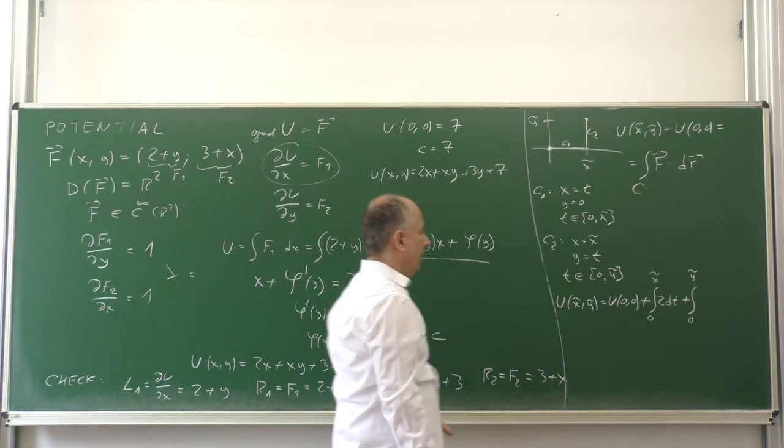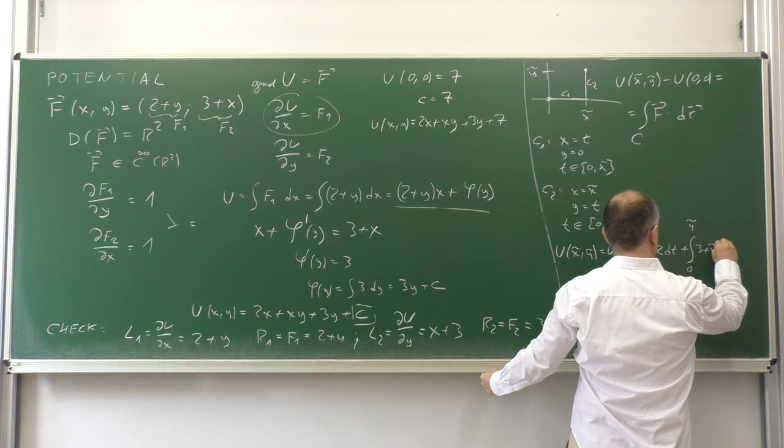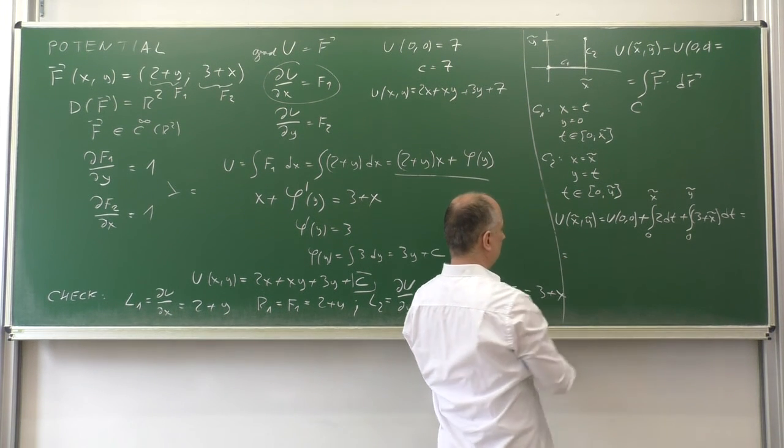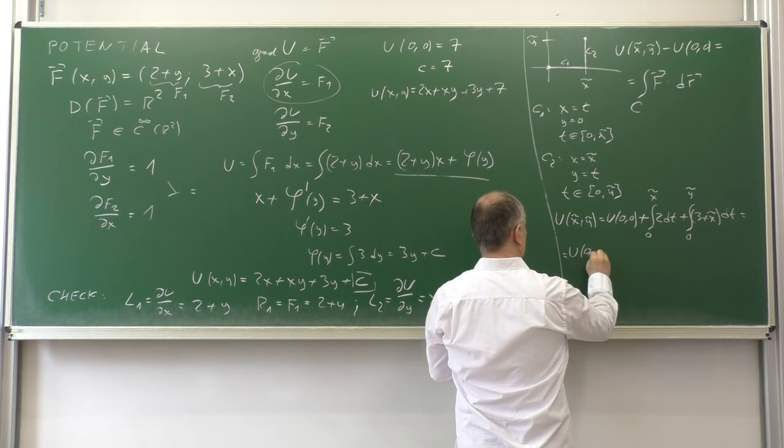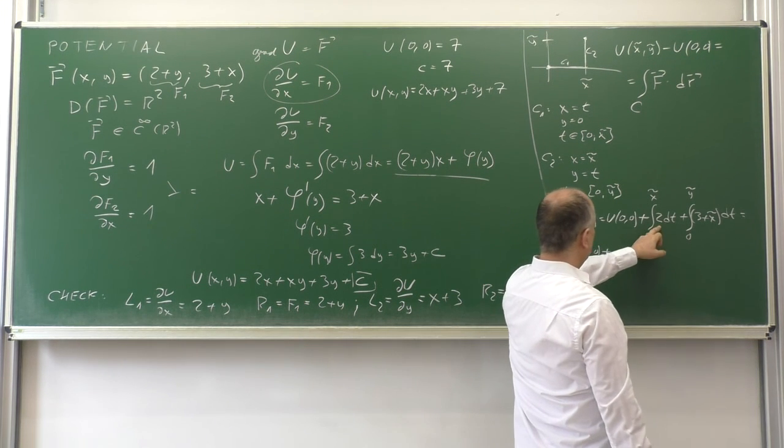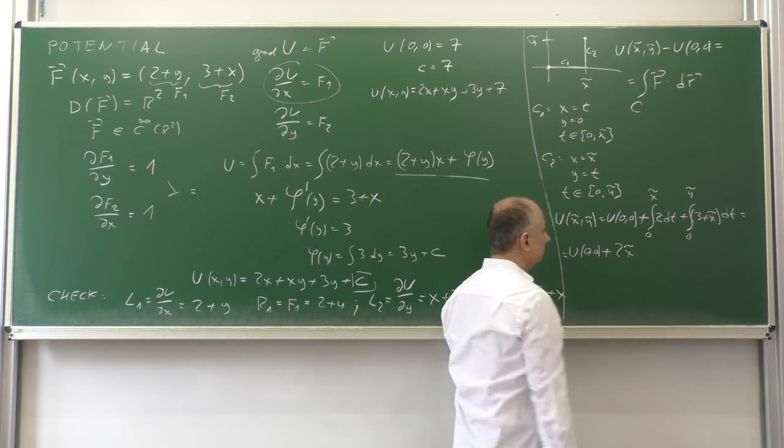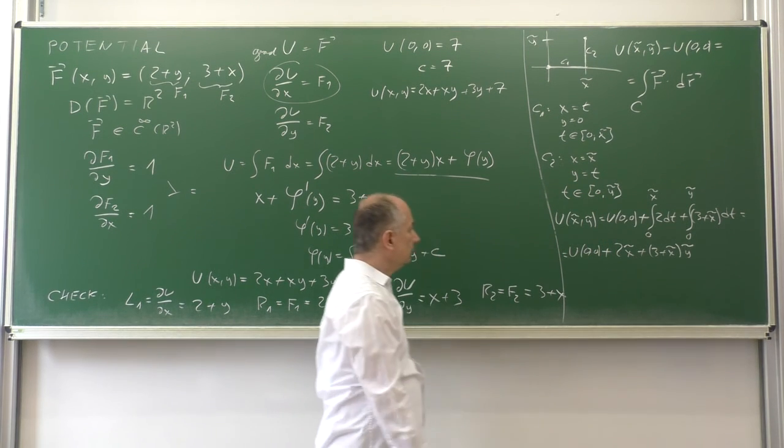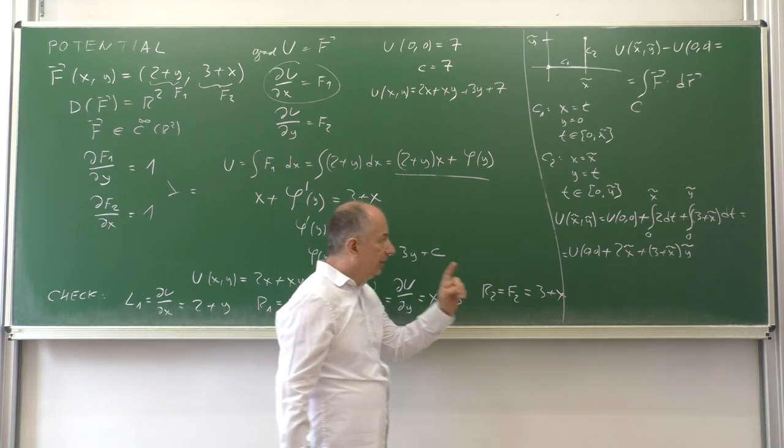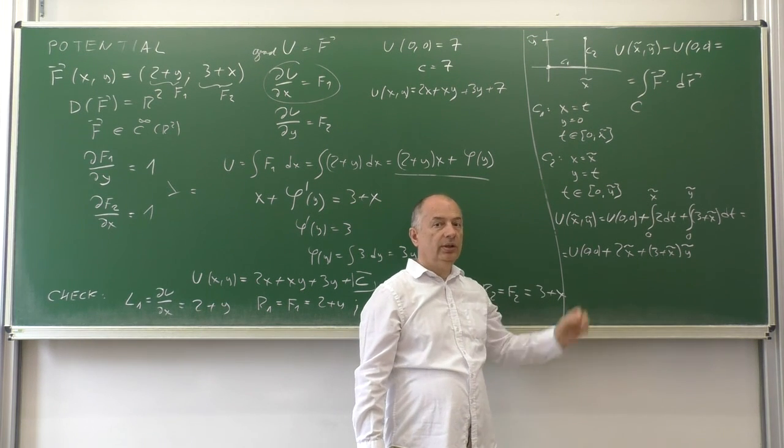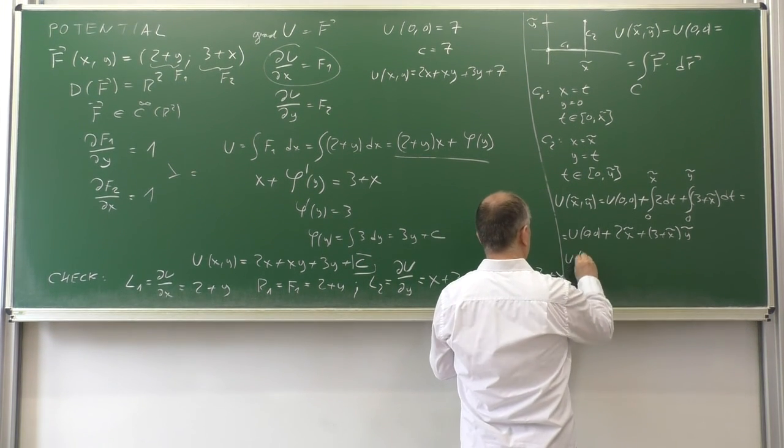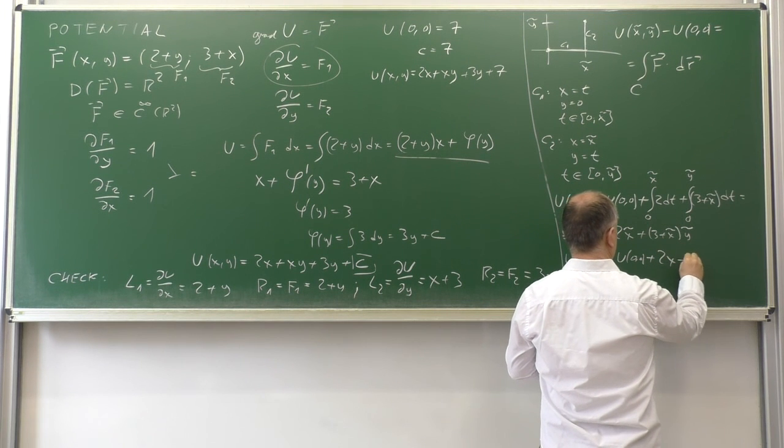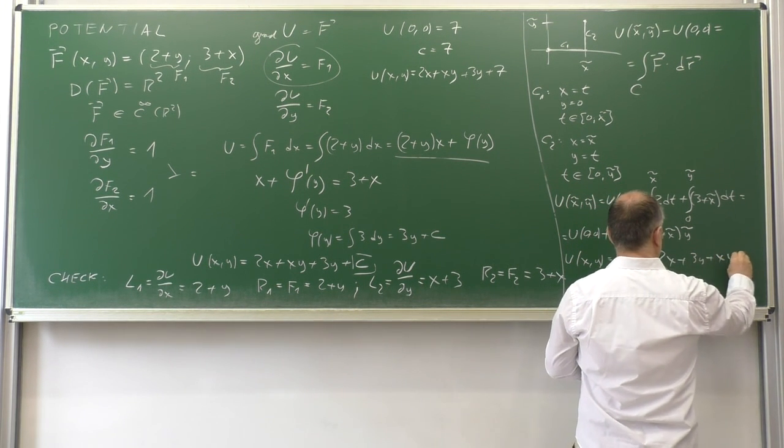F2 is 3 plus x, but x is equal to x tilde, dy which is dt. So we have u at (0,0) plus 2 times x tilde plus 3 plus x tilde, which is a constant, times y tilde. At this point we can remove the tilde and write that u(x,y) equals u(0,0) plus 2x plus 3y plus xy.